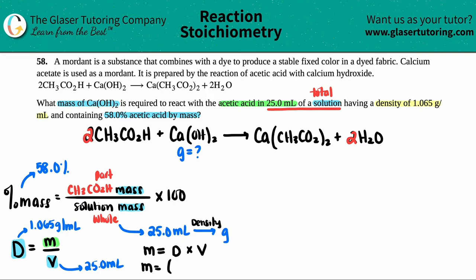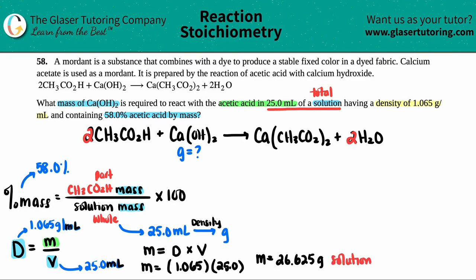Mass equals 1.065 times 25 — the volume units of the density and the volume both use mL, so they cancel. The mass of this solution equals 26.625 grams. That is of the total solution, because the 25 mL came from the whole solution.